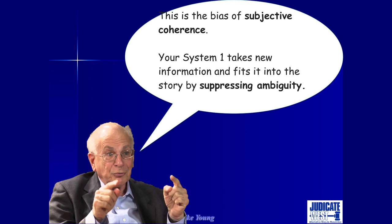System 1 has got this thing worked out beautifully. What Kahneman says about subjective coherence is that System 1 not only brings in new information and fits it to the story, it also suppresses ambiguity. If there's any questionable way to interpret the facts, it will interpret it in a way that's consistent with the story and suppress the ambiguous interpretation. You're not needing to call in System 2 to think hard about it. System 1 is really good at this, and we're going to see a little bit later how this gets you into trouble.